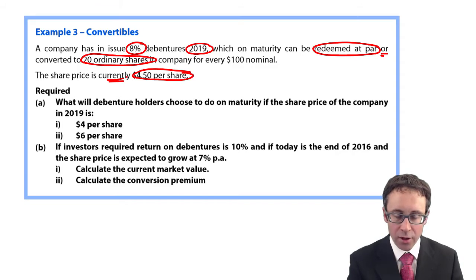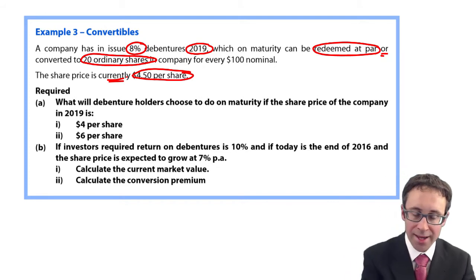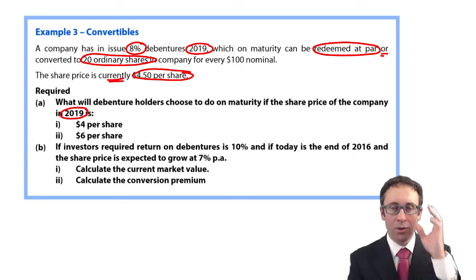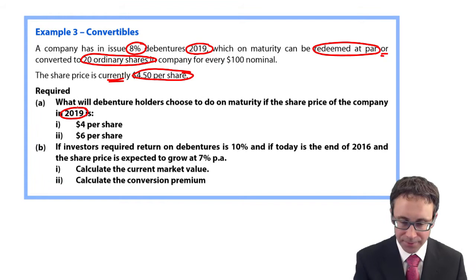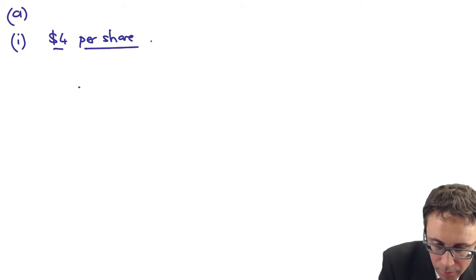So what have we got? Part A says, what will the debenture holders choose to do on maturity if the share price of the company in 2019, so in the future, is $4 or $6 per share. Would you convert? Well, what you've got there is part one. If it was $4 per share, then what you've got there, your shares would be 20 of them at $4 each.